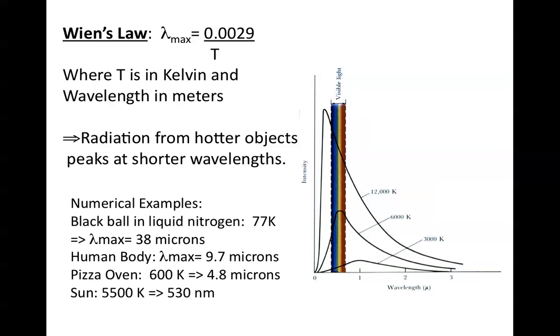We can use two simplifications of the black body law function to characterize black bodies. One of them is called Wien's law, which states that the peak wavelength, the wavelength where that black line peaks, is equal to a constant, 0.0029, divided by the temperature.